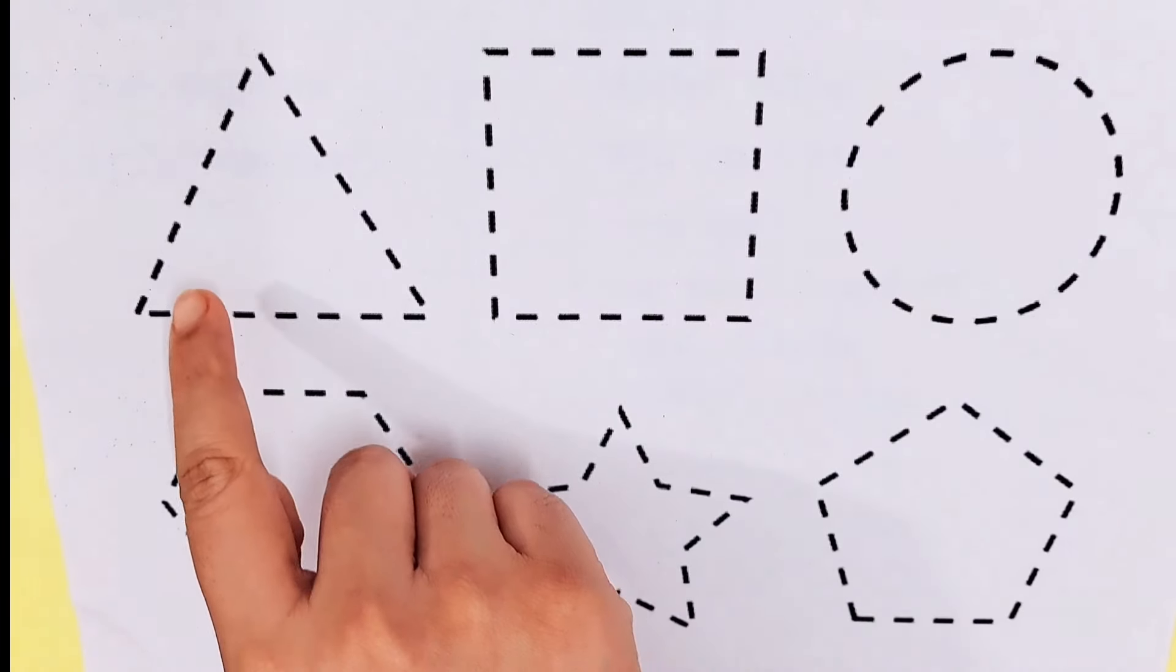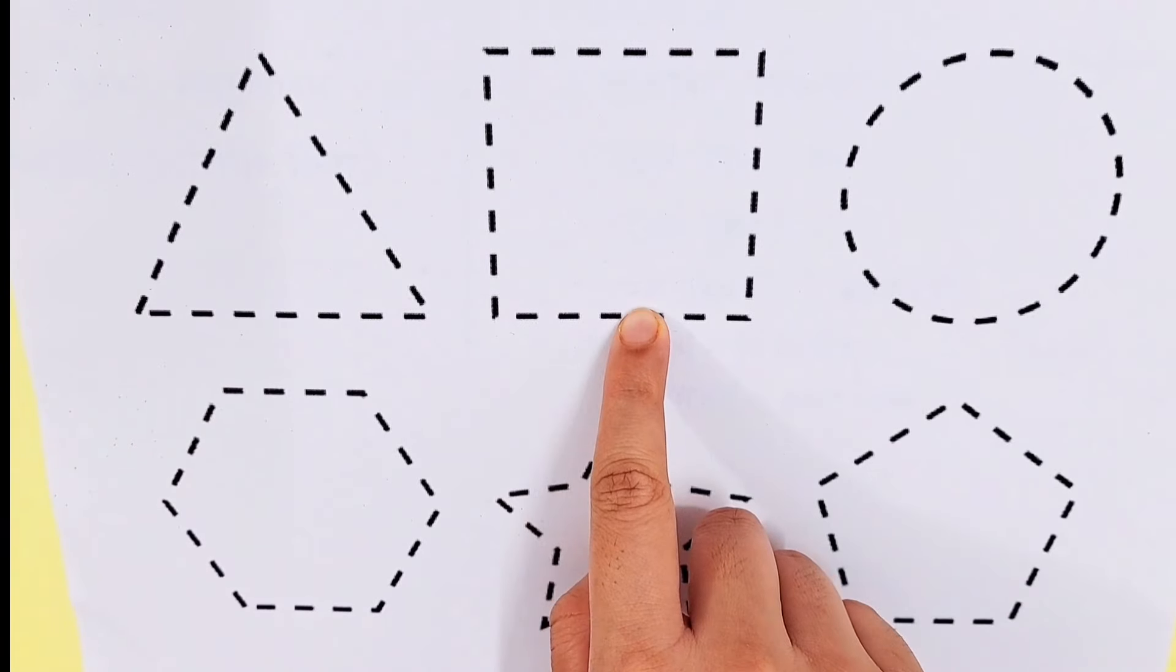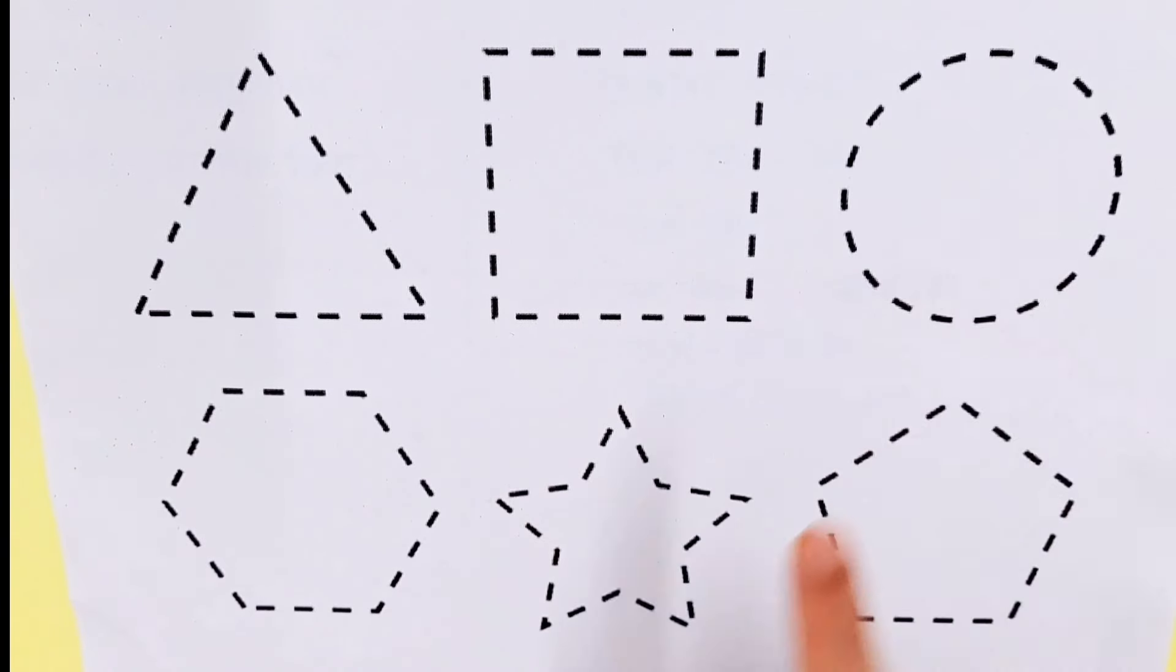Let's try to learn some 2D shapes: triangle, square, circle, hexagon, star, pentagon.